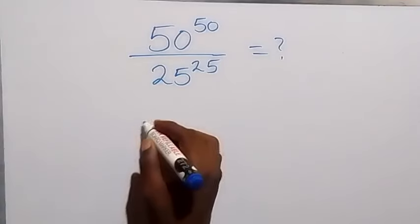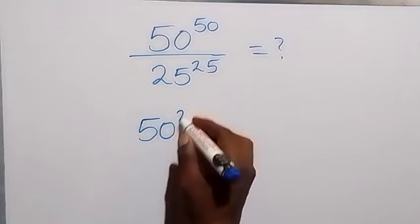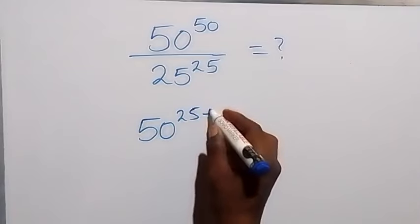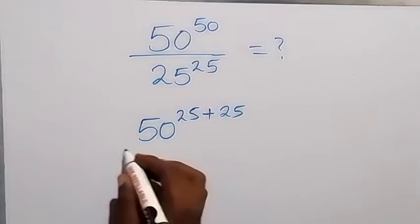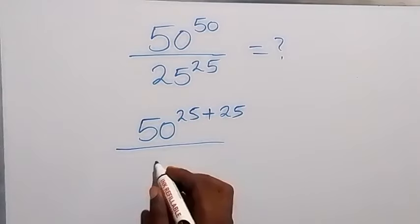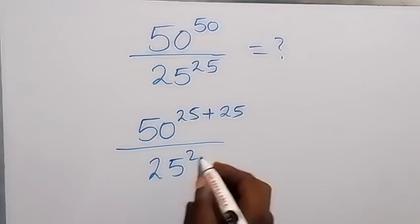From here, let's write this as 50 raised to power 25 plus 25. As this 25 plus 25 will still give us 50, then divided by 25 raised to power 25.